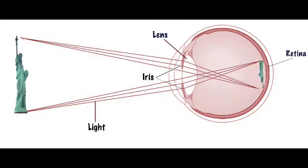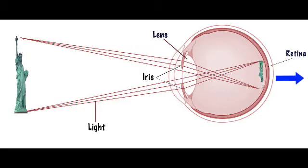After the image enters the eye, it becomes focused by the action of muscles which make the lens thicker or thinner, depending on the distance the image is from your eye. The point at which the image comes into focus is called the focal point. After the image enters the lens, it becomes reversed and upside down as it strikes the back of your eye, which is called the retina. The image impulses then travel through the optic nerve to the brain, where it's processed and the image is perceived in its proper orientation.